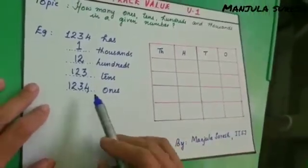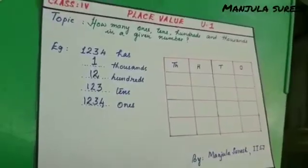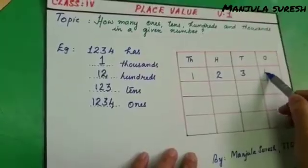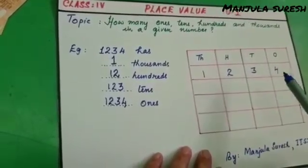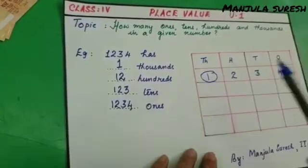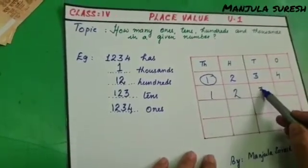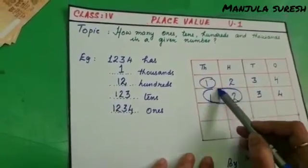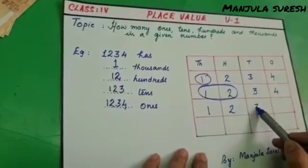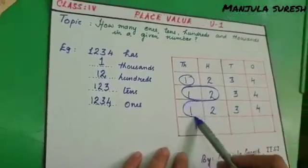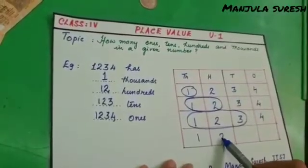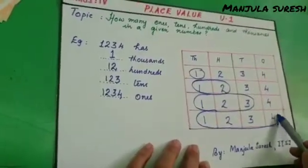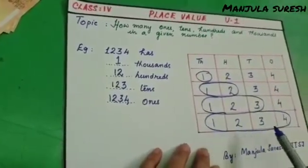Now how to write this in the place value chart? I am writing this number 1234. It has how many thousands? Only 1000. It has how many hundreds? It has 12 hundreds. Now the same number has how many tens? It has 123 tens. Now it has how many ones? 1,234 ones in 1,234.